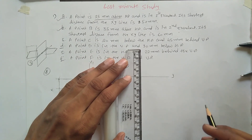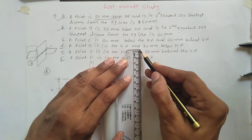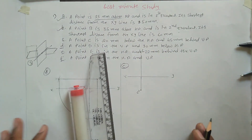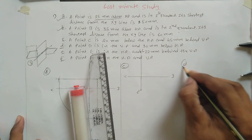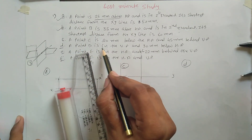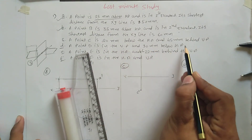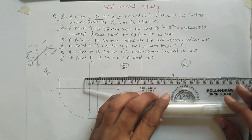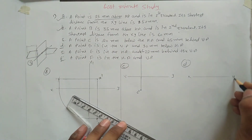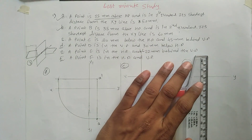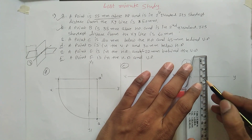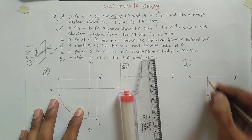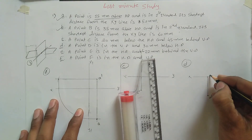Point D is on the VP and 30mm below HP. Below HP means the front view is drawn below the XY line at a distance of 30mm. So this point is D-dash, and since it is on the VP, this is your point D.